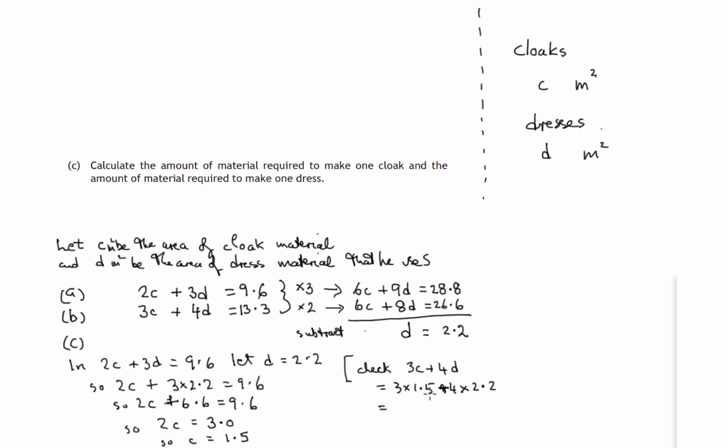So 3 lots of 1.5 would be 4.5, and 4 lots of 2.2 is 8.8. And when we add these, 8 plus 5 is 13, 1 to carry, 8 and 1 is 9 and 4 is 13. So that does give us 13.3 as required.